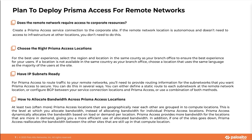To connect your remote network location to Prisma Access, you can use a Palo Alto Networks next-generation firewall or a third-party IPsec-compliant device, including SD-WAN, that can establish an IPsec tunnel to the service. Prisma Access allows you to pick the geographic location where you want to deploy it to secure your remote network. Regarding service connections: if your remote network locations require access to corporate headquarters infrastructure for user authentication and access to critical network assets, you must create a service connection.